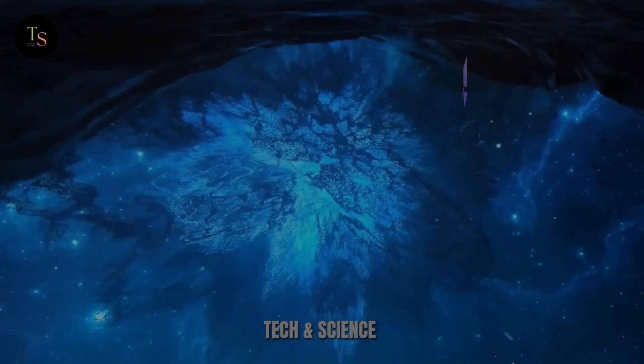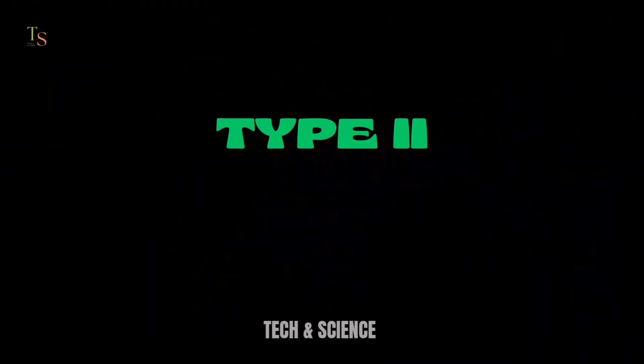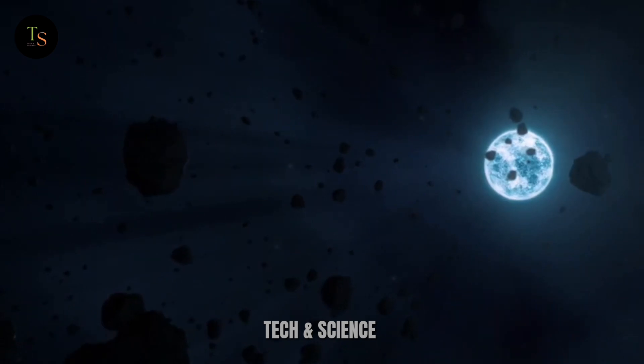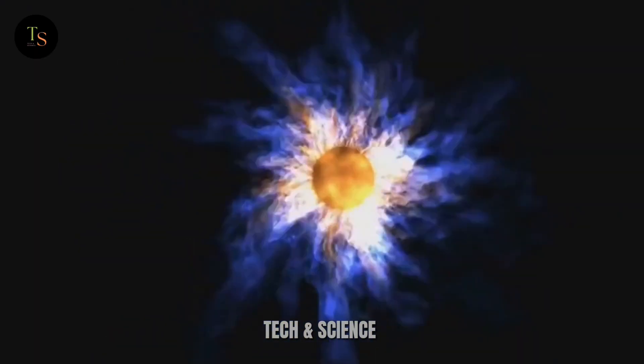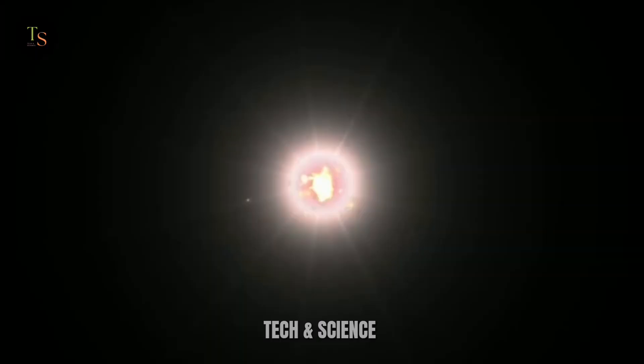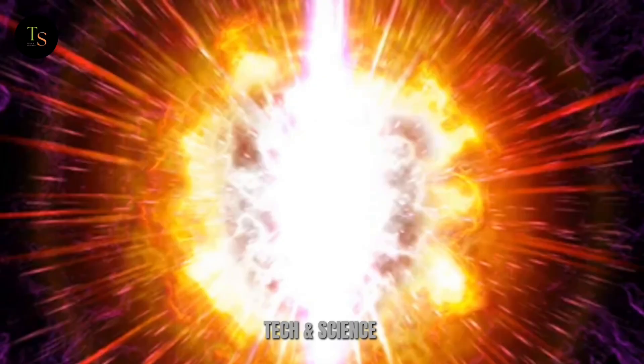Types of supernova. There are two main types of supernova, Type 1 and Type 2. Type 1 happens when a white dwarf, a dense, compact star, steals too much material from a companion star or merges with another white dwarf. When it can't handle the extra weight, boom! A supernova.